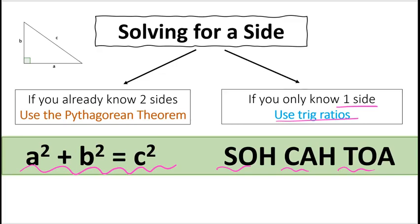So today I will show you how to work with a squared plus b squared equals c squared to find the side length of a right triangle. Let's do some examples.